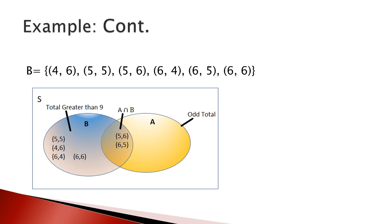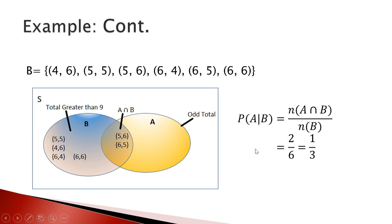We don't need to write all the elements in A, but it's enough to know the elements in the intersection. Looking at the intersection, there are two elements: (5,6) and (6,5). So to calculate, probability of A given B equals the number of elements in A intersection B over the number of elements in B. That gives 2 over 6, and when you simplify it, you get one third. So that's the answer for this question.